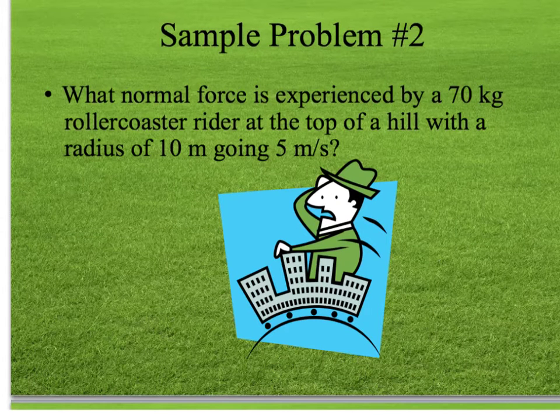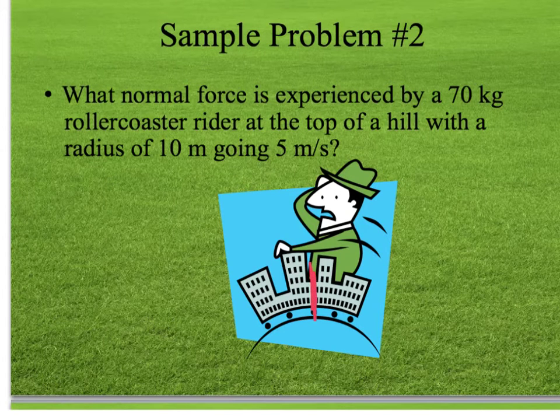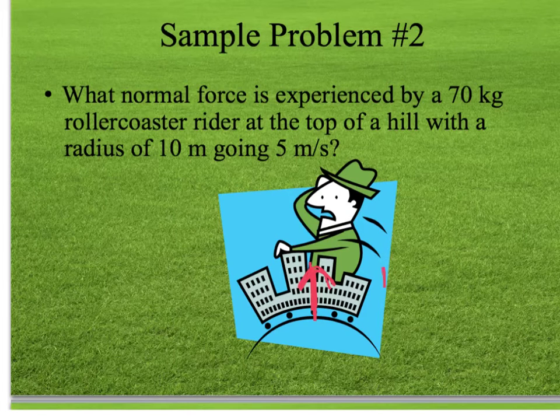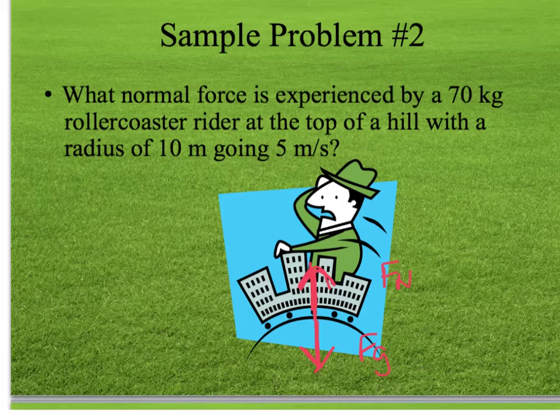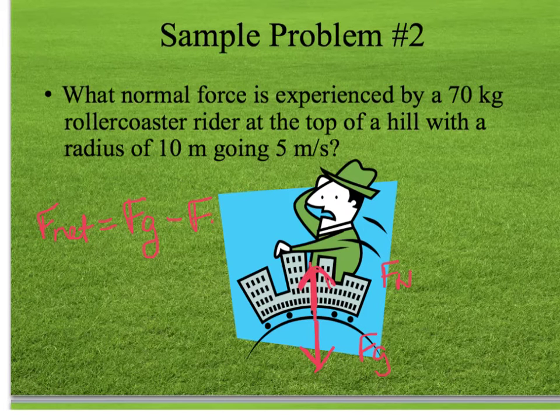This one's more tricky. It's going to use our idea of net force again. So what normal force, remember the normal force is the force of the ground pushing up on the rider. So what normal force is experienced by a 70 kilogram roller coaster rider at the top of a hill with a radius of 10 meters per second going 5 meters per second. So we have the normal force going up, but we also have his weight going down. And so our net force, since these guys are going in opposite directions, is our gravitational force minus our normal force.